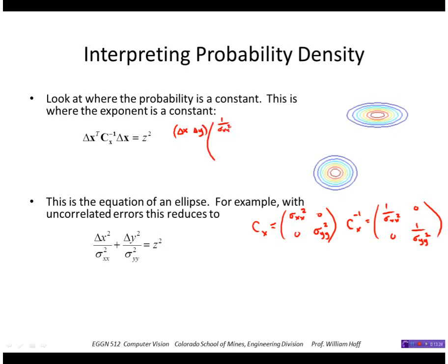Times delta x, delta y. So multiplying that out, you would get this equation right here.